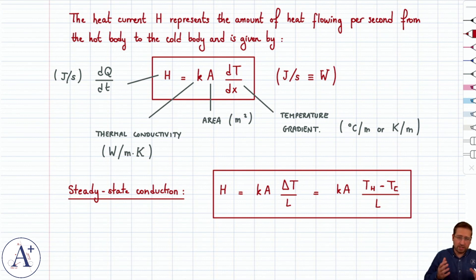Because dT dx could get complicated, especially if it's also a dependency on time. So steady state conduction is a lot easier to deal with. It gives you a constant heat current H. And you can just get that by writing KA delta T divided by L.